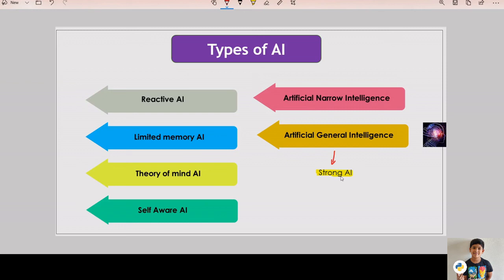With new discoveries and breakthroughs in the field of theory of mind and self-awareness, artificial general intelligence will become a reality, but it will take time.